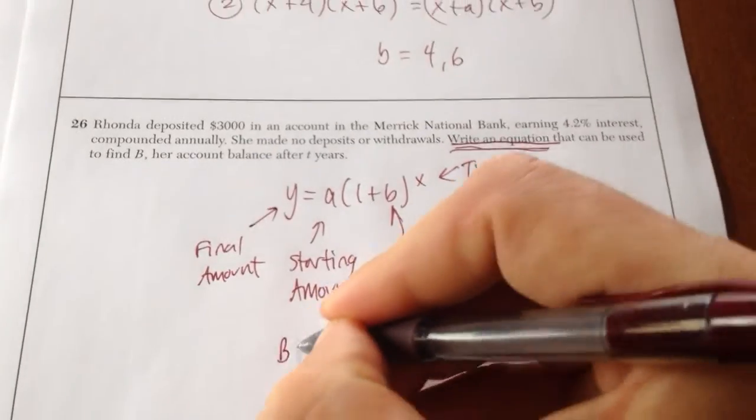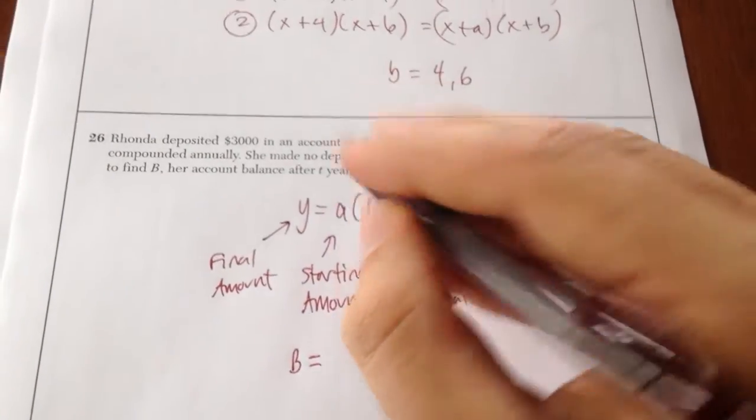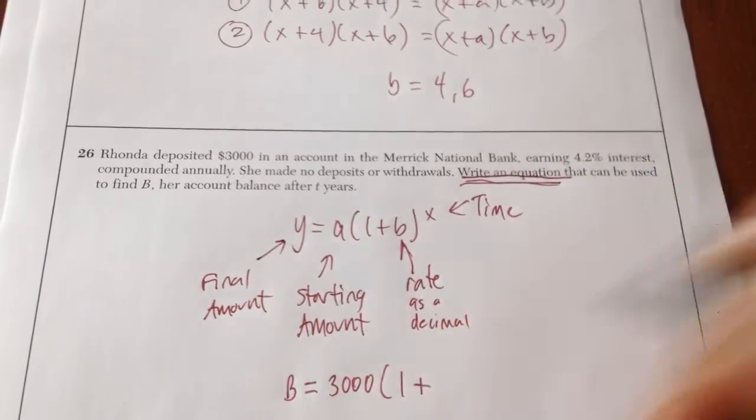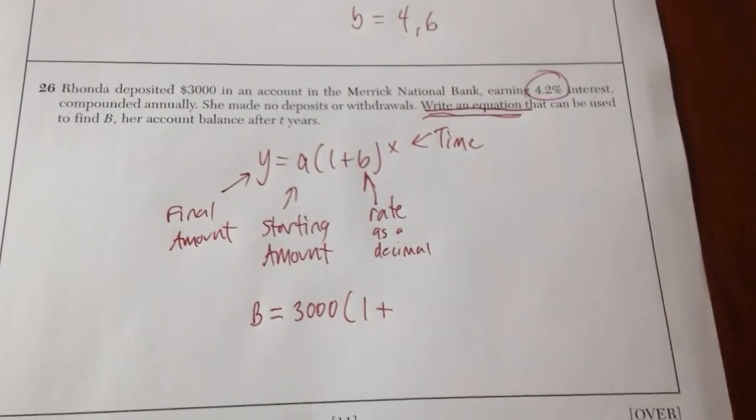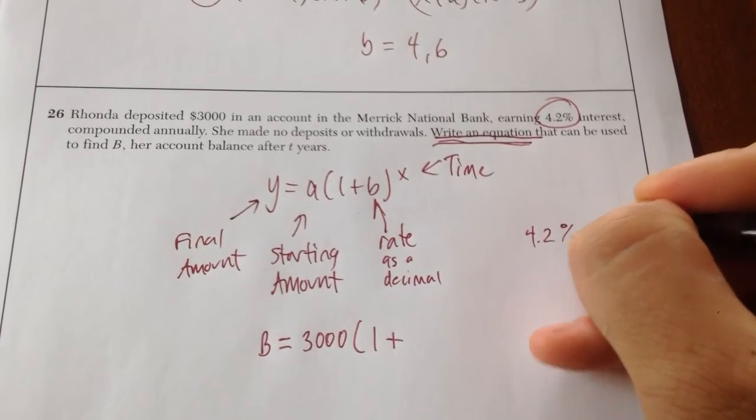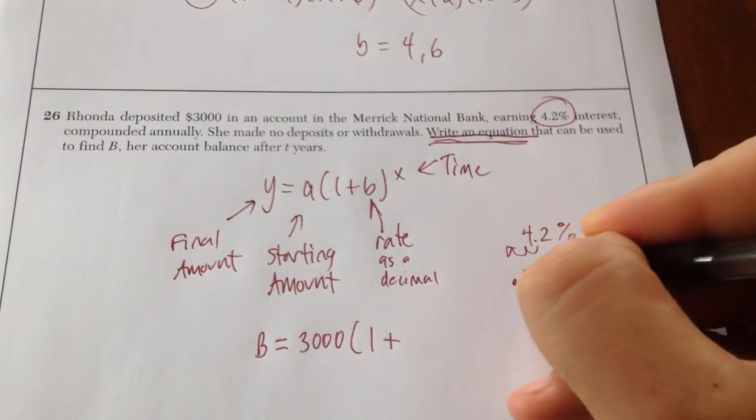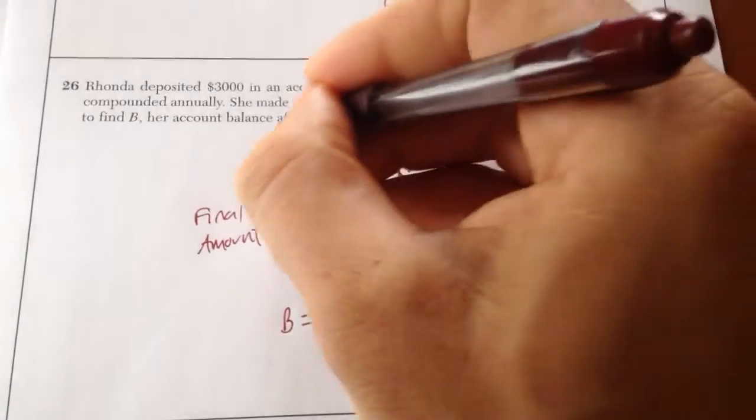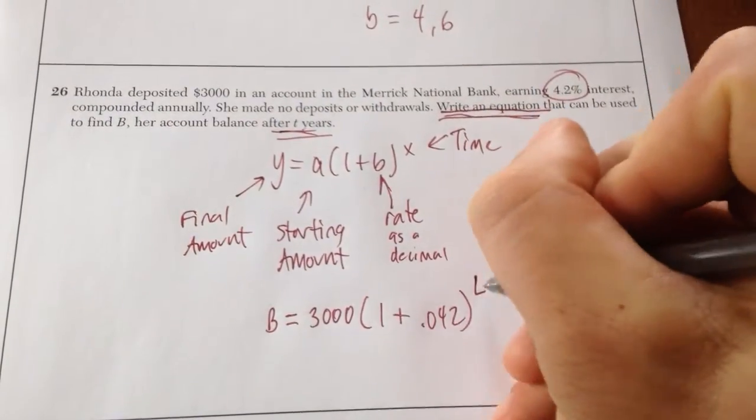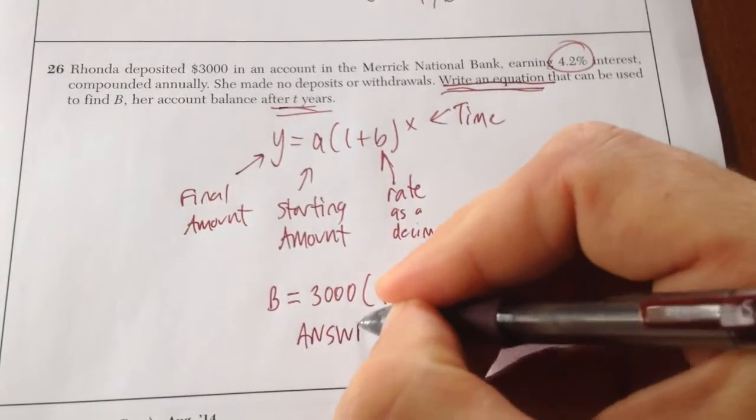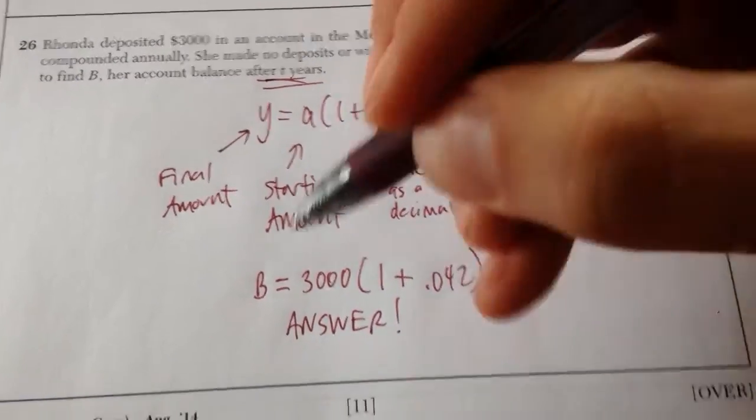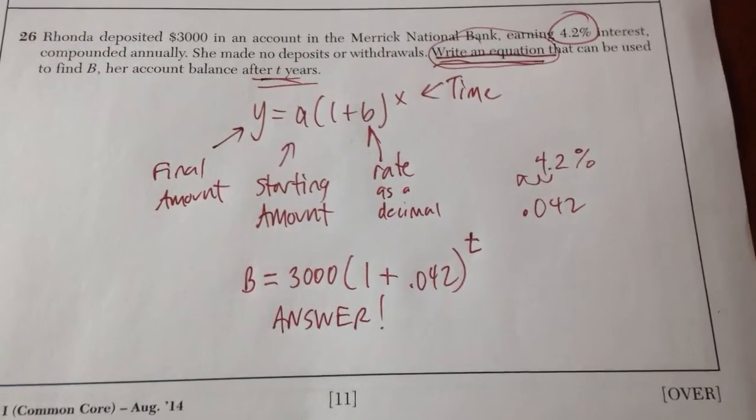So we're going to call that b. a is our starting amount. That's 3,000. 1 plus, here's your rate. But I have to convert to decimal by moving it back two places. So it's .042. After t years, this is your answer. There is nothing to solve. Again, they're asking you to write an equation. I wrote an equation. That's it.